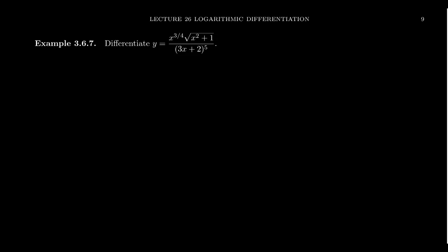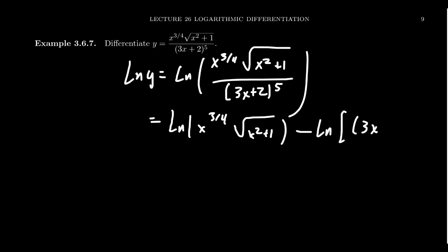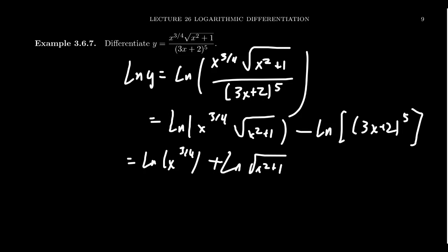But if we use logarithms, we can simplify this dramatically. Taking the natural log of both sides gives the natural log of y equals the natural log of x to the three-fourths times the square root of x squared plus one, over three x plus two to the fifth. Expanding the right-hand side: first, recognizing the quotient, we get the natural log of x to the three-fourths times the square root of x squared plus one, minus the natural log of three x plus two to the fifth power. Then since the numerator is a product, we expand further to the natural log of x to the three-fourths plus the natural log of the square root of x squared plus one, still minus the natural log of three x plus two to the fifth.